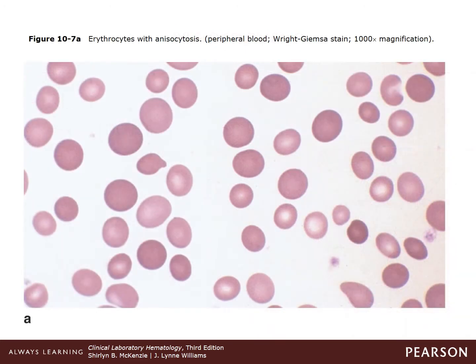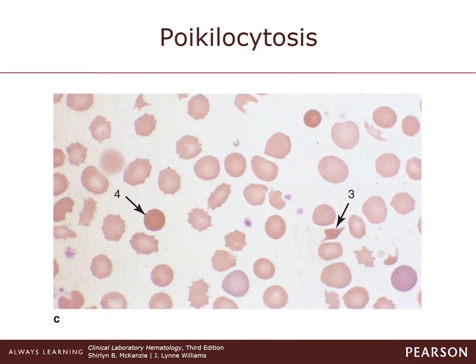Here is a peripheral smear showing anisocytosis — you can see different sizes present, including microcytes, normal cells, and macrocytes. Now we will discuss the different shapes, or abnormal shapes, that can be seen on the peripheral smear. The term is called poikilocytosis, and we will discuss each individual abnormality due to its shape.